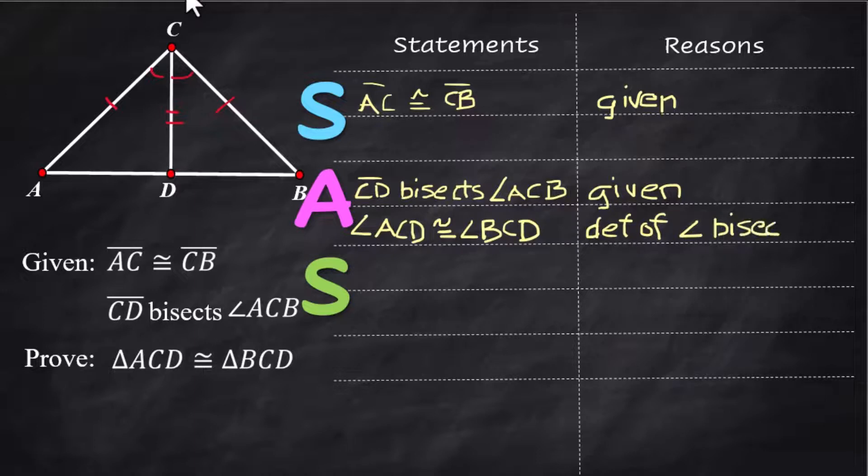You can't skip that given; you have to put that in there, and then you can say that they are congruent. Segment CD is congruent to segment DC—well, they are the same, they're the same side—and they're congruent to each other because of the reflexive property.